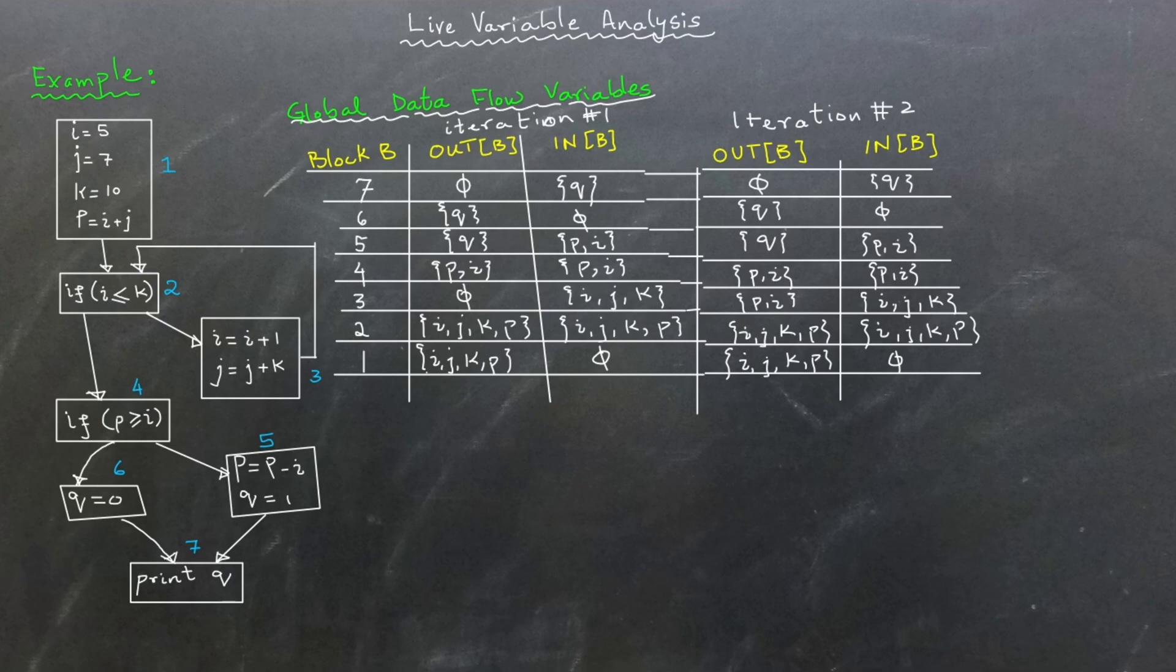So the rule is, if a variable appears in the in b set but not in the out b set, it means the variable is live at the start of the block but becomes dead after the block ends. This allows us to safely remove it at the exit of that block since its value will no longer be needed in the program. For example, in this case, in block 7, the variable q is present in the in-set but not in the out-set. Therefore, q can be safely removed from the memory at the exit of block 7.